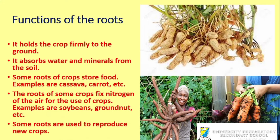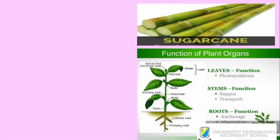Some roots can also be used to reproduce new crops. An example is potato — the roots of potato can be used to reproduce new ones. The roots of some weeds such as tridax and elephant grass can also be used to reproduce new ones. Now, what are the functions of the stem?